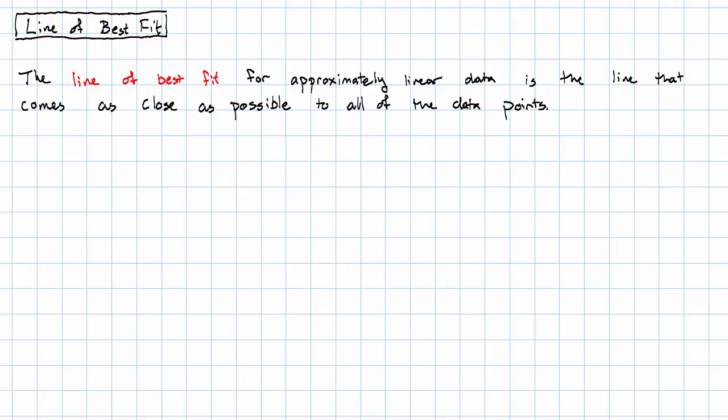The line that our data are scattered along is called the line of best fit. The line of best fit comes as close as possible to all of the data points.